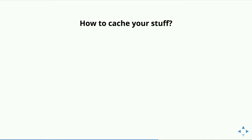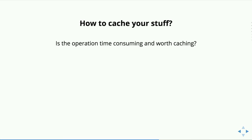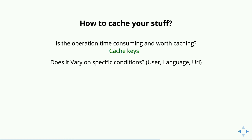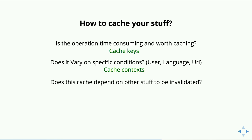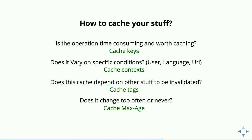Let's see how to actually cache stuff from a developer perspective. If your operation consumes too many cycles, you probably want to cache it. If you want to cache it with a separate cache key in separate storage, you specify the cache keys. If your content is specific to conditions, use cache contexts. If your cache depends on external dependencies to be invalidated when something else changes, use cache tags. If you want to control cache lifetime, use cache max-age. Those four make up the cacheability metadata you provide in render arrays.